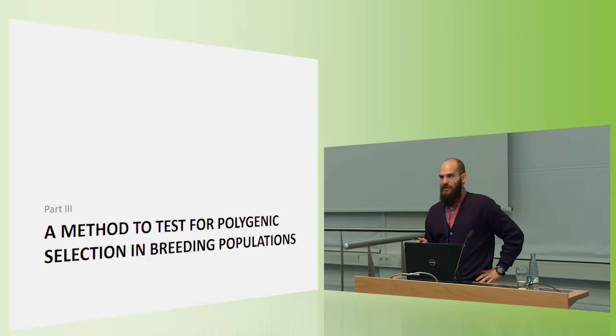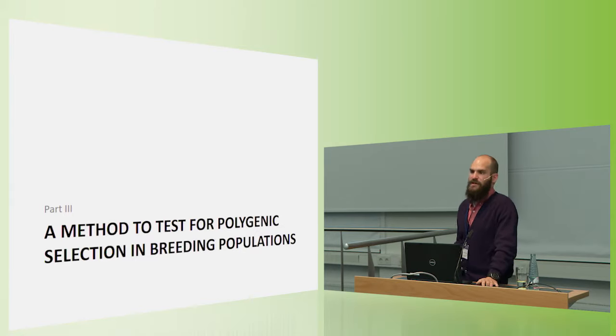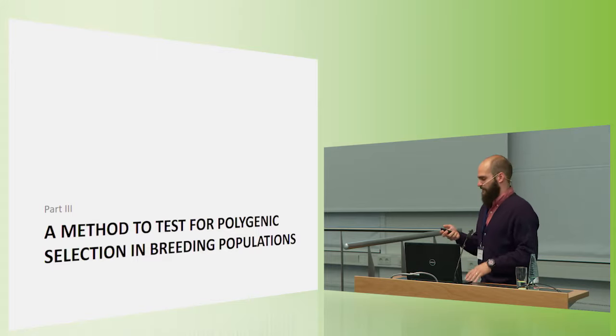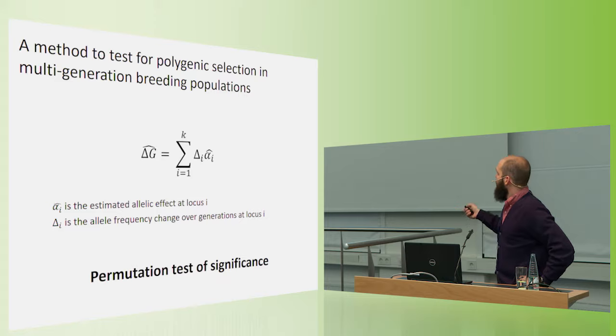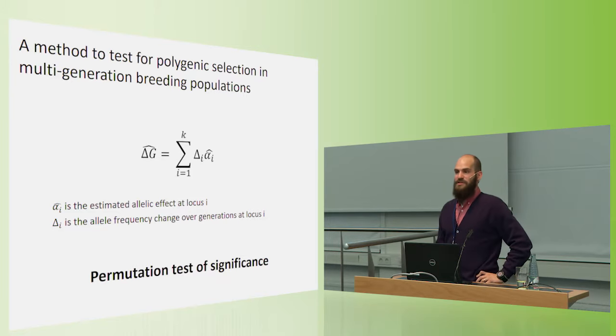So now I'm going to describe a project that I worked on with Henderson Miani's group here in Göttingen, where we developed a new method to test for polygenic selection in breeding populations. So in many ways, this is an extension of the Coop-Berg method that I mentioned earlier. But instead of requiring many, many GWAS hits that have been published from a 250,000 plant study, we're going to use a little bit of a different technique.